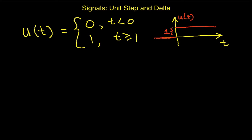It also turns out that if you know the response of a system to a unit step, you can figure out the response of the system to any other input if it's linear in time and variant. So that's the unit step function.